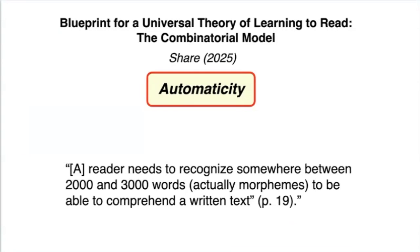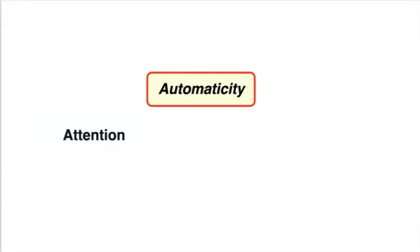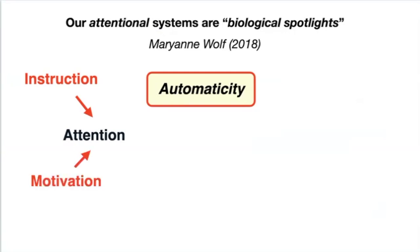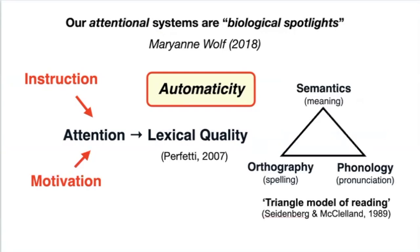So how do we achieve automaticity for this many morphemes or words? Like all learning, it begins with where we direct our attention. I love Marion Wolfe's statement that our attentional systems are biological spotlights — no learning can occur where our attention does not shine. As Canadian philosopher Wayne Gretzky says, you miss 100% of the shots you don't take. Instruction attempts to guide the learner's attention to maximize generative learning. Of course, motivation is crucial for attention as well. The lexical quality we have for a word reflects the attention we give it in speech and print over time. If that attention binds the pronunciation, spelling, and meanings of a word sufficiently, we achieve that critical threshold of automaticity.